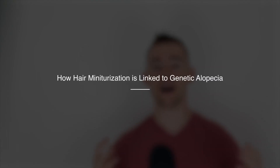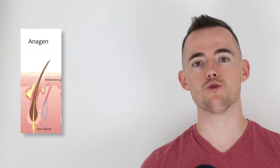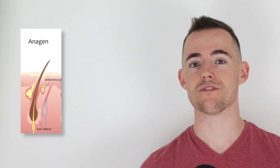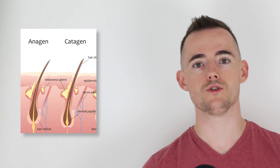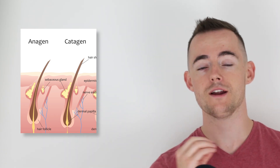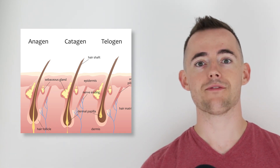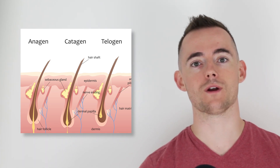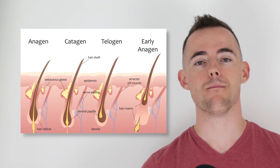Now let's look at how hair miniaturization is linked to genetic alopecia. To understand the role miniaturization plays in hair loss, we must first look at the hair growth cycle. The first is the anagen or growth phase, lasting anywhere between three to five years — the main growing phase. The catagen or transition phase is the shortest, lasting only one to two weeks, intermediate between growth and rest. Then we have the telogen or rest phase, lasting three to four months, during which hair shedding increases and old hairs fall out so new hairs can take their place, restarting the cycle back into anagen.